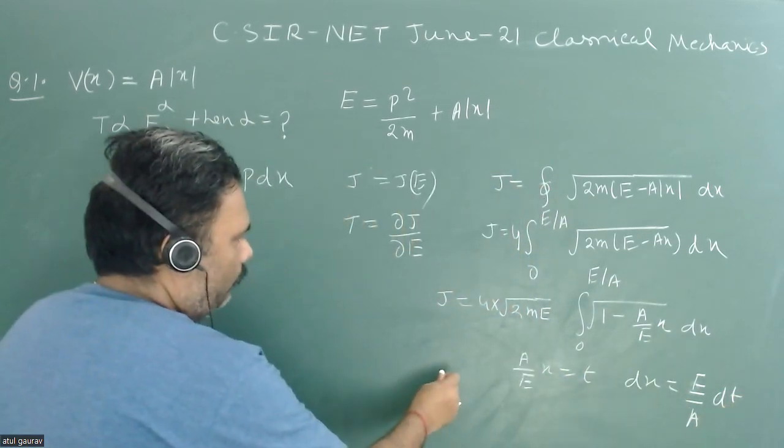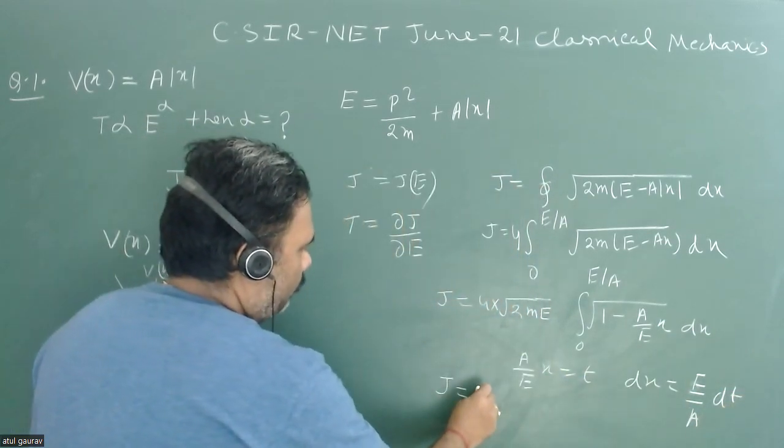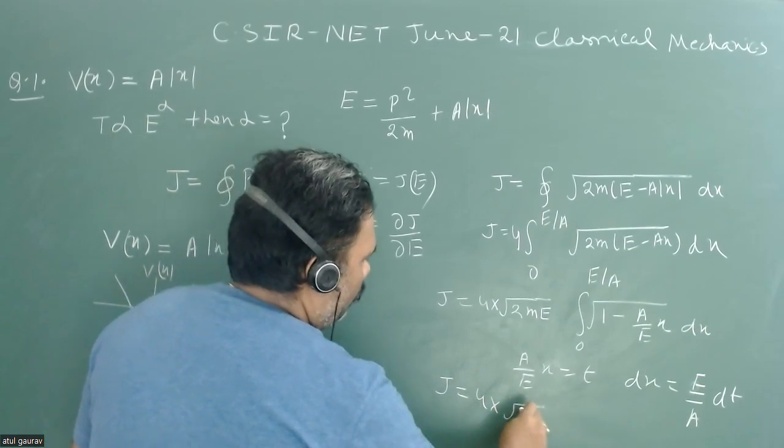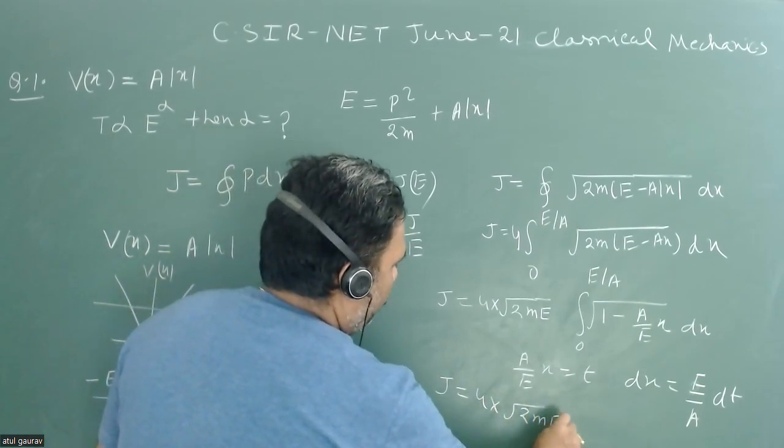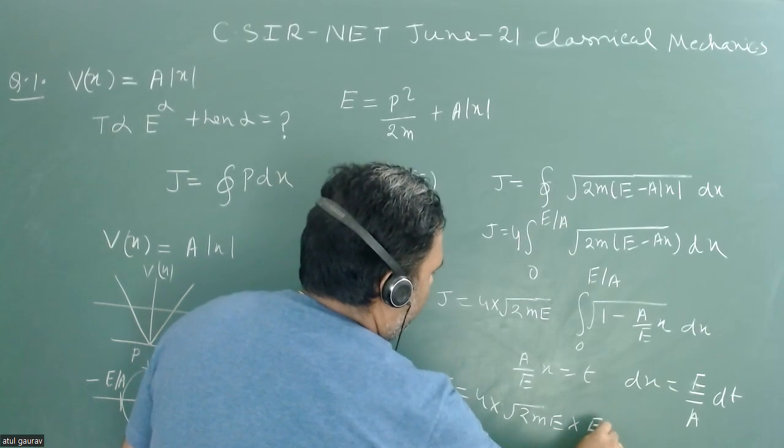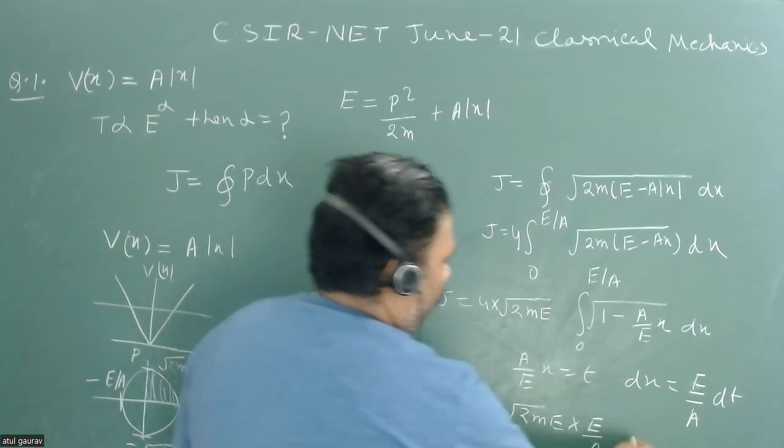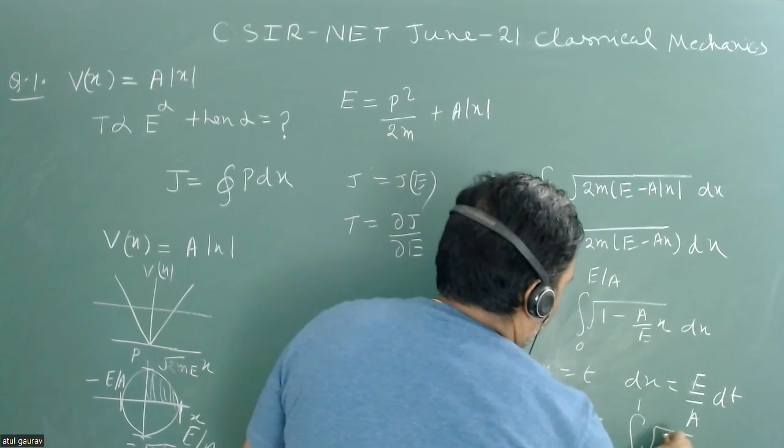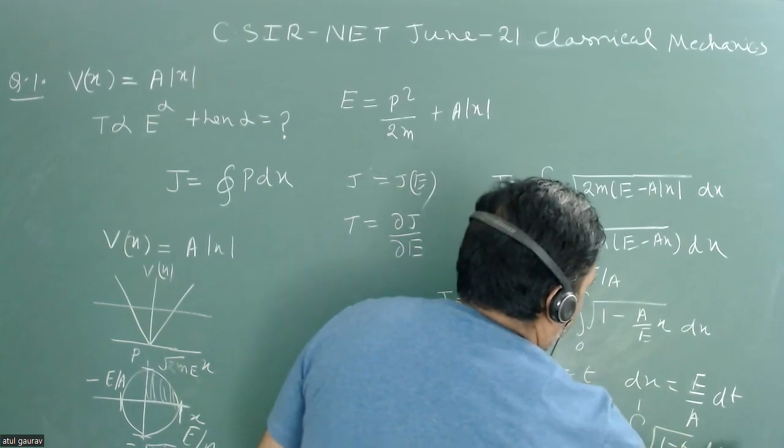So what will happen, we will get this particular J as 4 into root under 2mE into E upon a, and we will go for integration 0 to 1 root under 1 minus t dt.